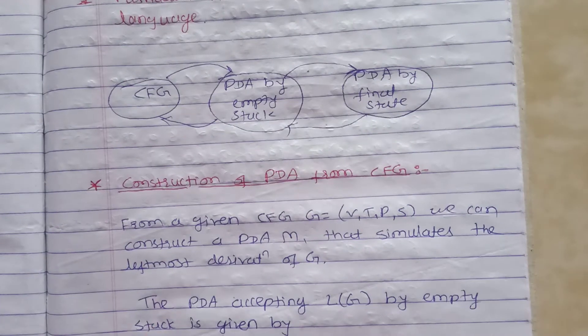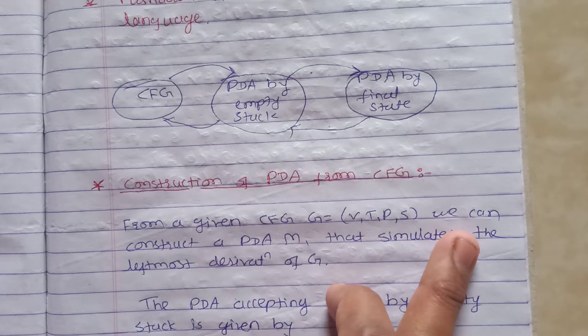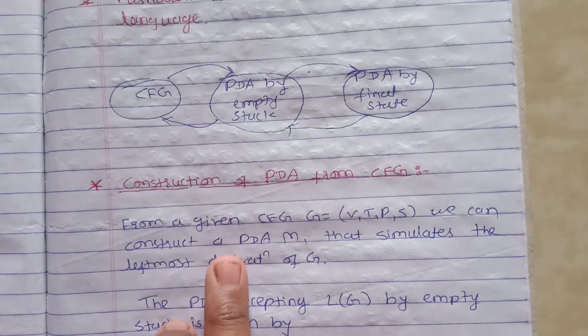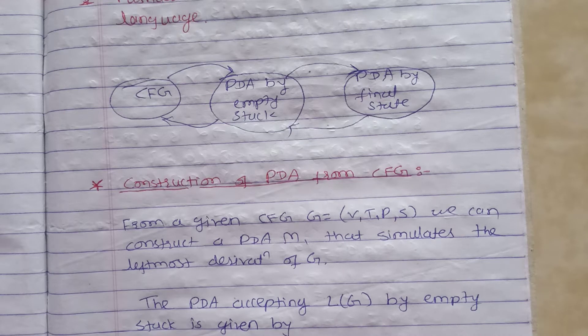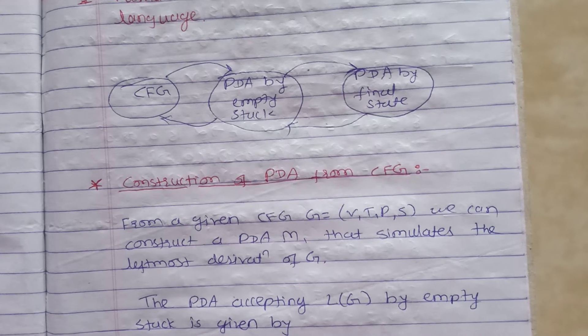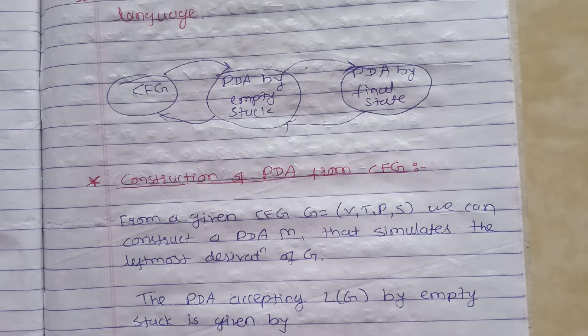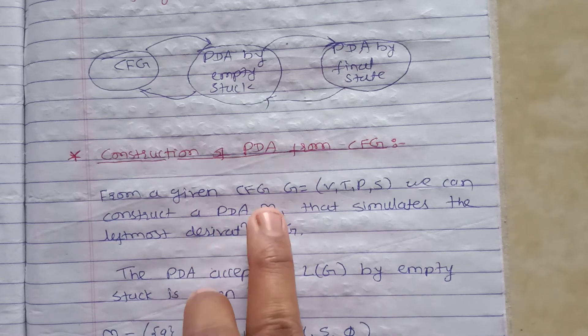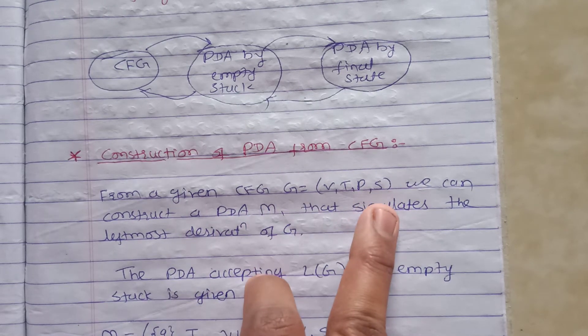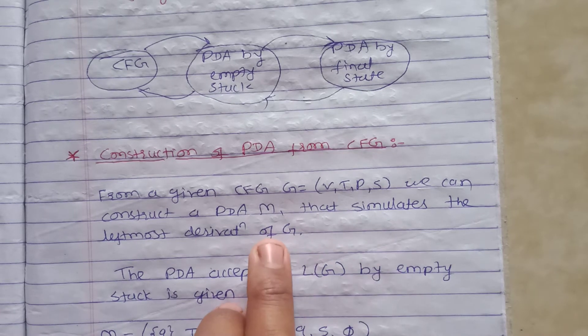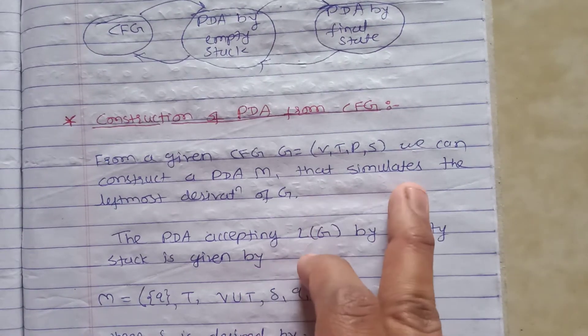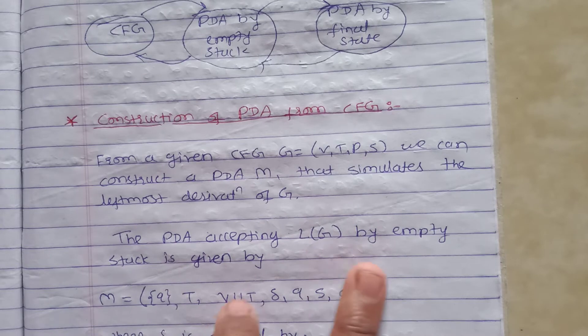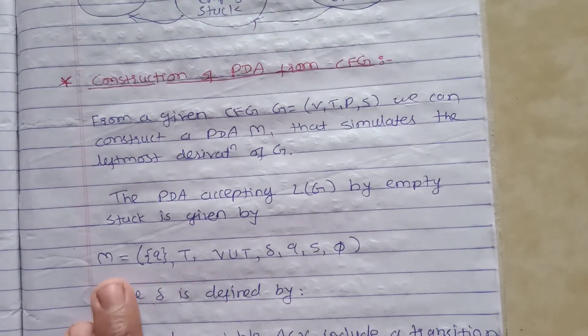First of all we will see the construction of PDA from CFG, that is context-free grammar. Context-free grammar to PDA conversion is very simple and one question may be asked on this form. From a given CFG, CFG is given that is (V, T, P, S), we can construct an equivalent PDA M such that it simulates the leftmost derivation of grammar.